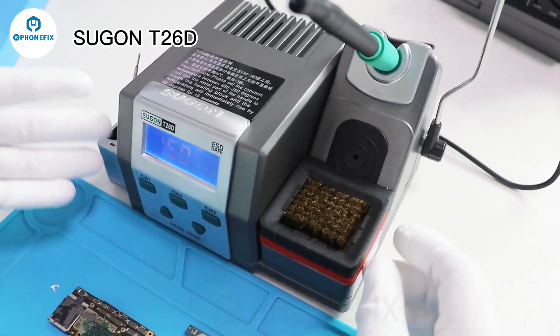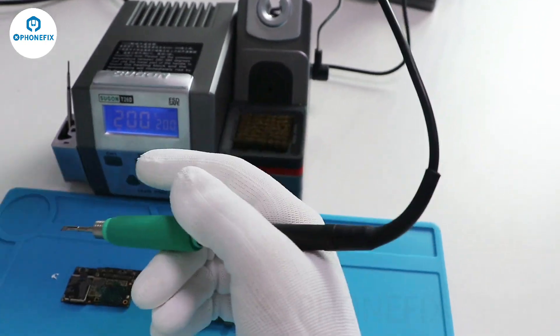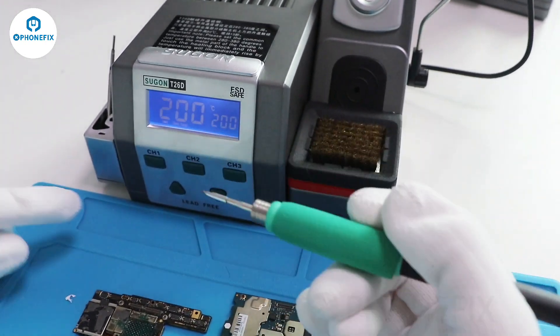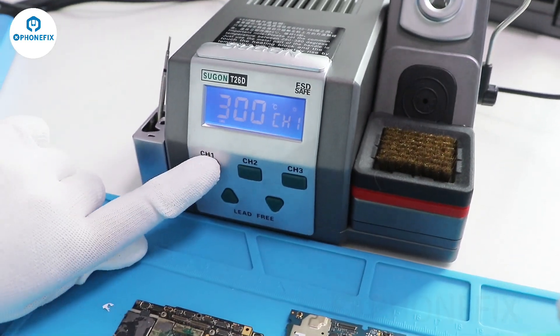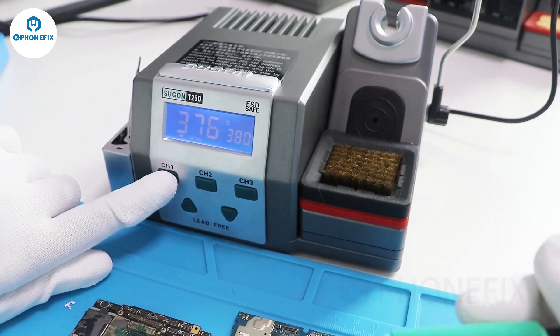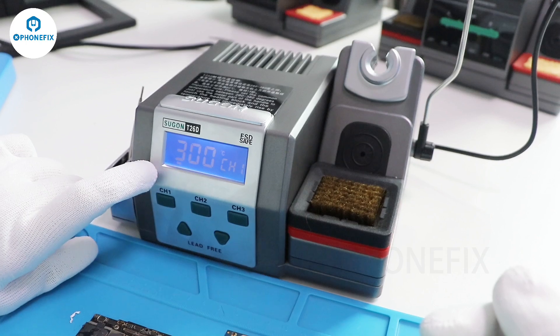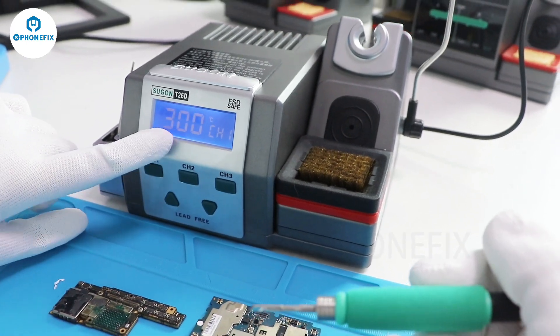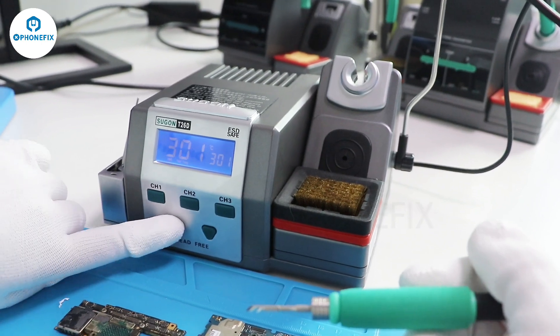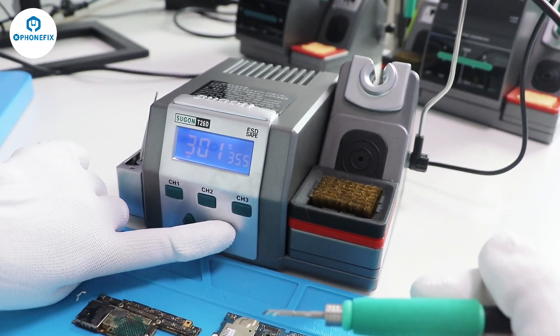Now here is the Sugon T2060. We have connected the handle with this station. And here is the three channel. We can set different temperature here. Like the first, second and third. First of all, now the temperature is 300. We try to adjust to the 150. Oh, it's very fast.